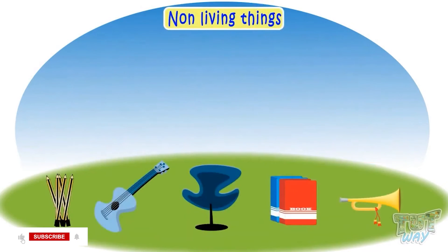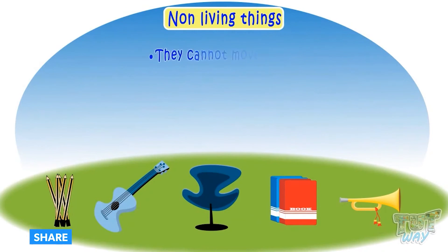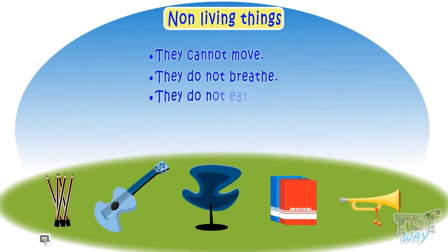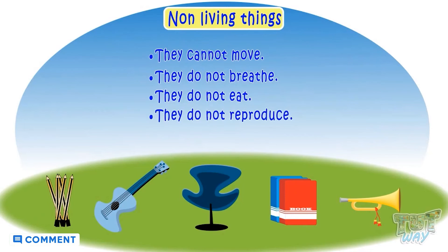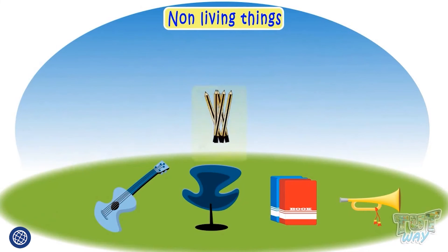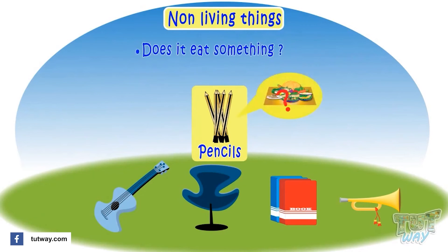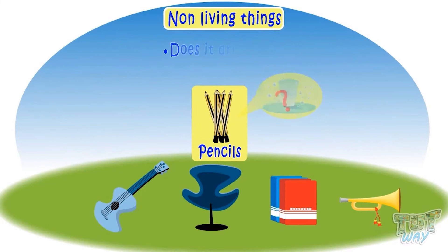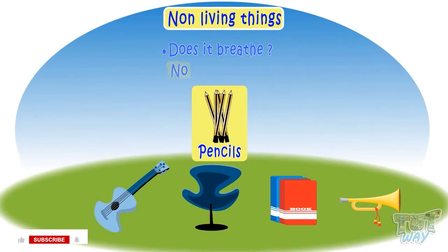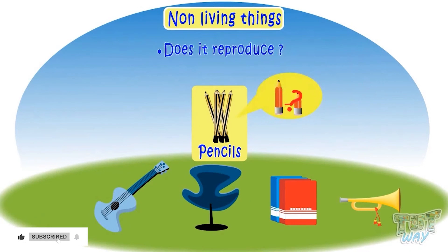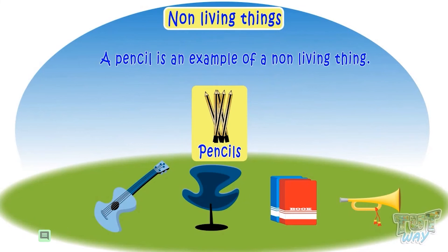Non-living things do not possess the characteristics of living things — they cannot move, do not breathe, do not eat, and do not reproduce. Here is your pencil. Does it move on its own? No. Does it eat something? No. Does it drink? No. Does it breathe? No. Does it reproduce — that is, does it produce a new pencil? No. So your pencil is an example of a non-living thing.